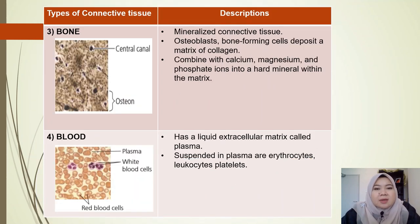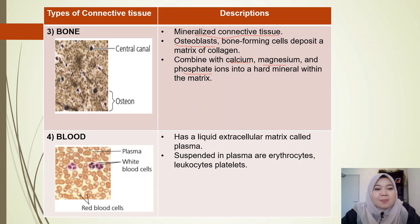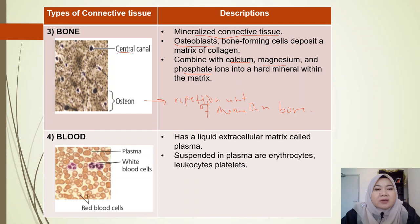The next one is bone, which is the mineralized connective tissue. Osteoblasts are the bone-forming cells that deposit a matrix of collagen, which combines with calcium, magnesium, and phosphate ions to form a hard mineral within the matrix. The repeating unit of mammalian bone is called the osteon. The central canal houses the blood vessel that supplies oxygen and nutrients to our bone.